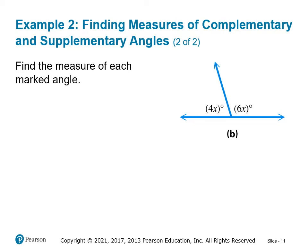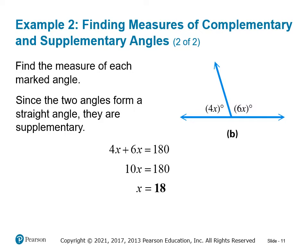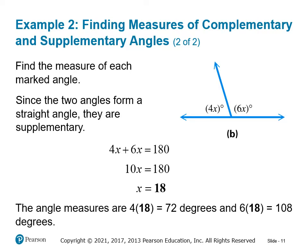Similarly, for supplementary angles, we add the two angles and set them equal to 180 because together they form a straight angle. Solving gives x equals 18. Again, we go back and plug in x to find the actual angle measures: one angle is 72 degrees and the other is 108 degrees.